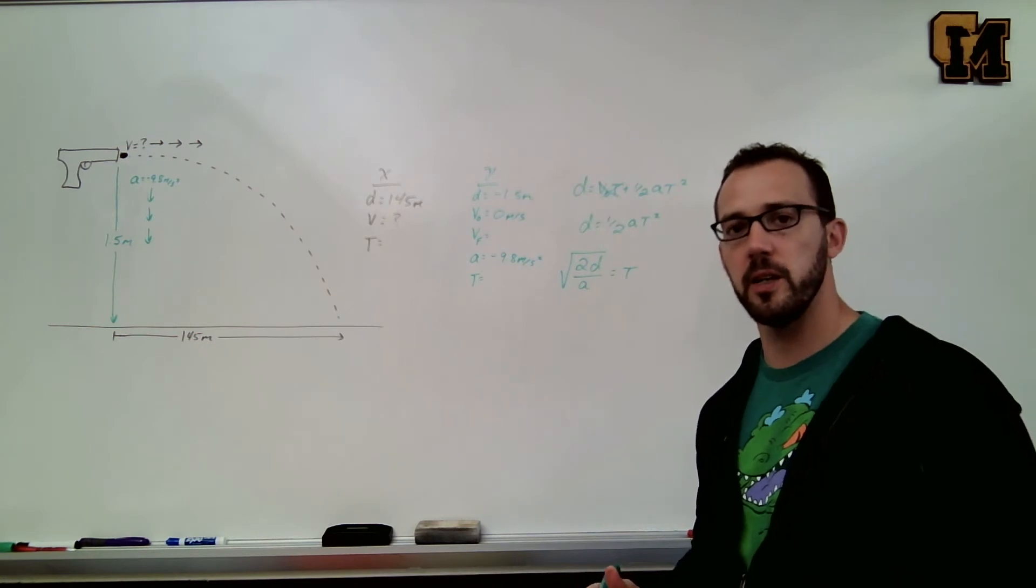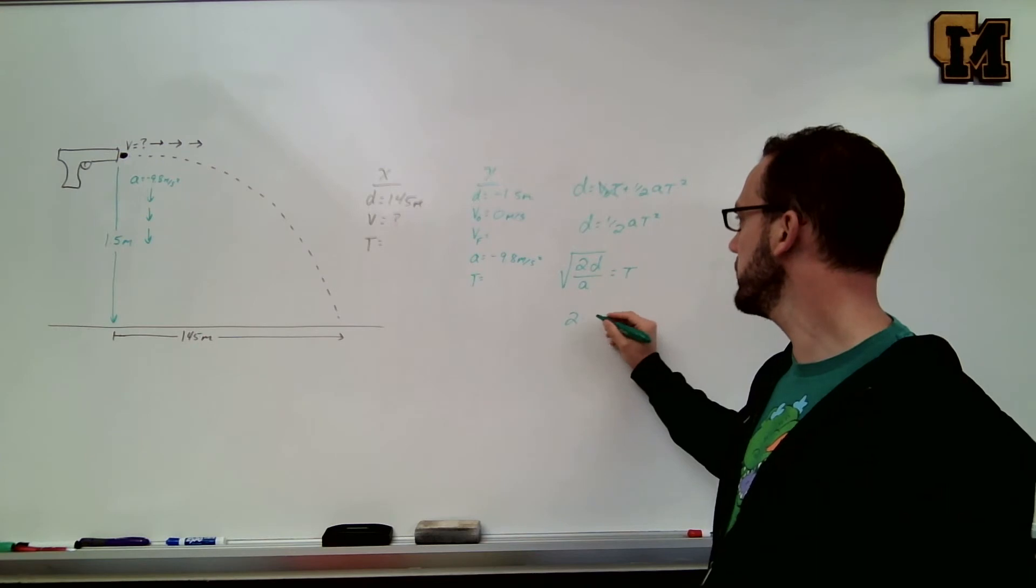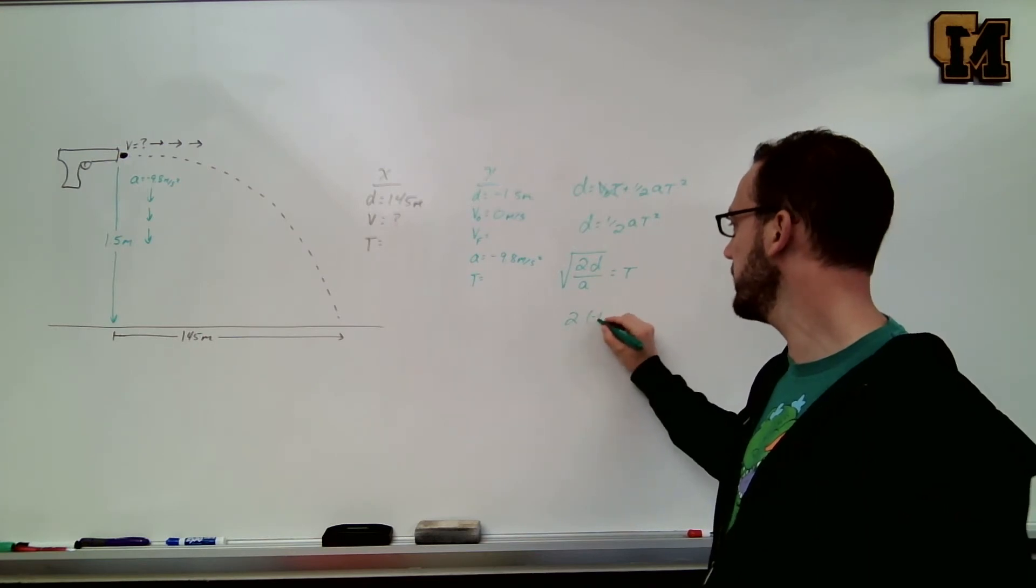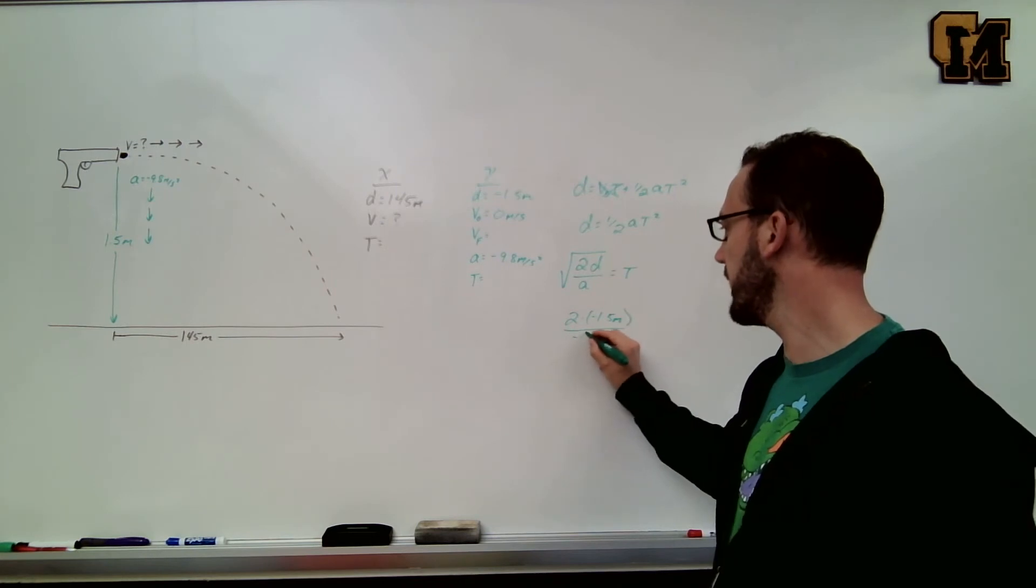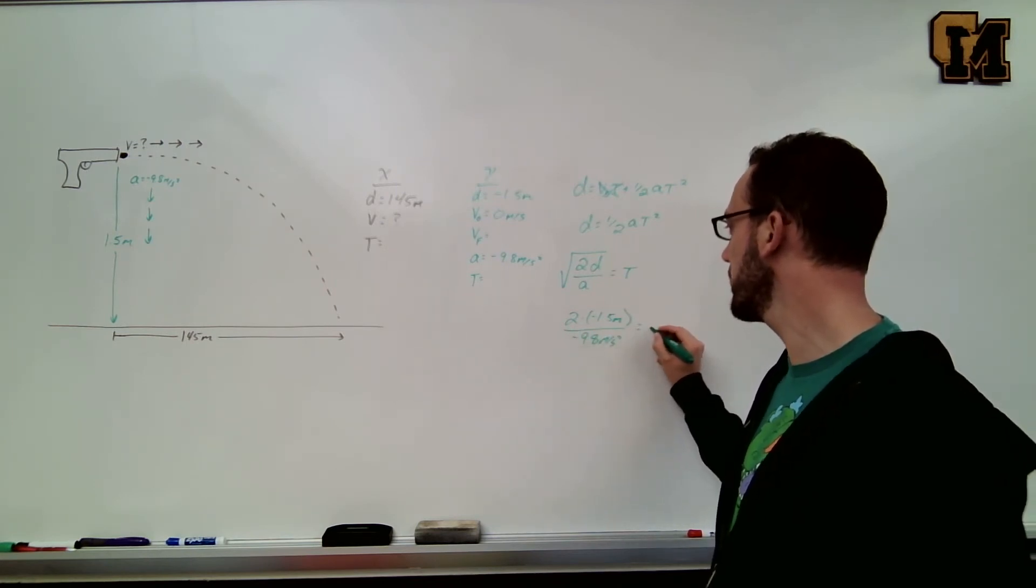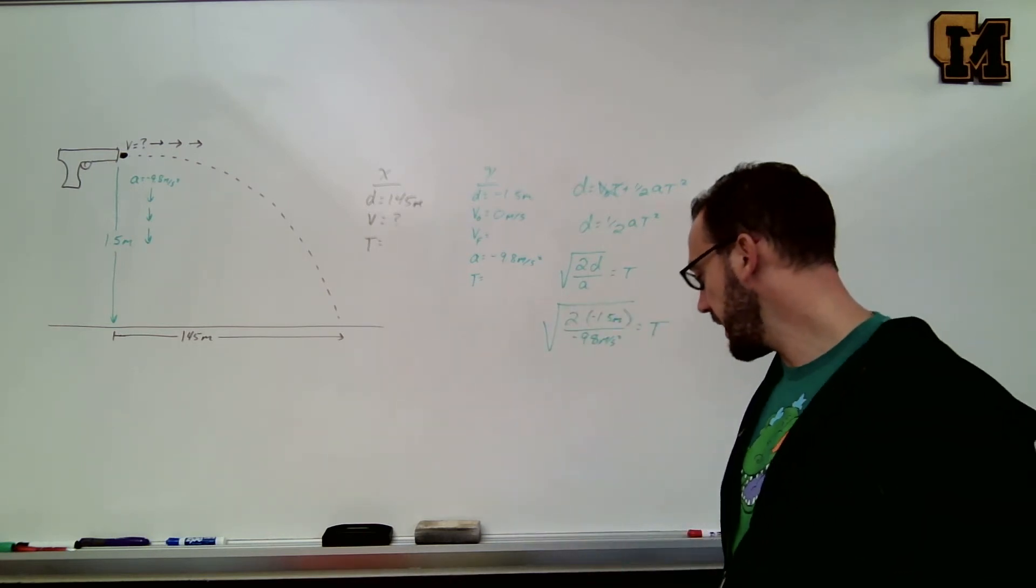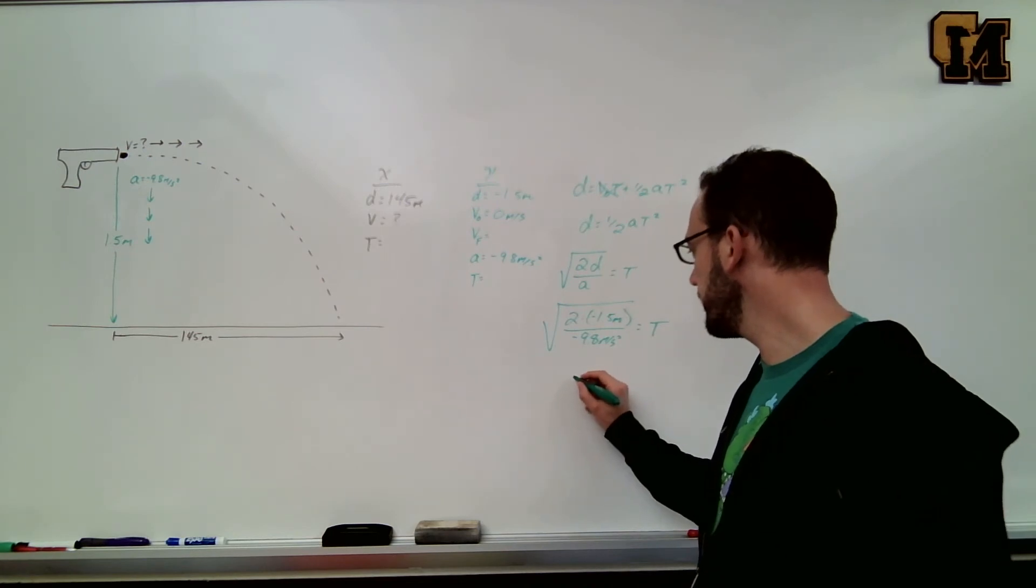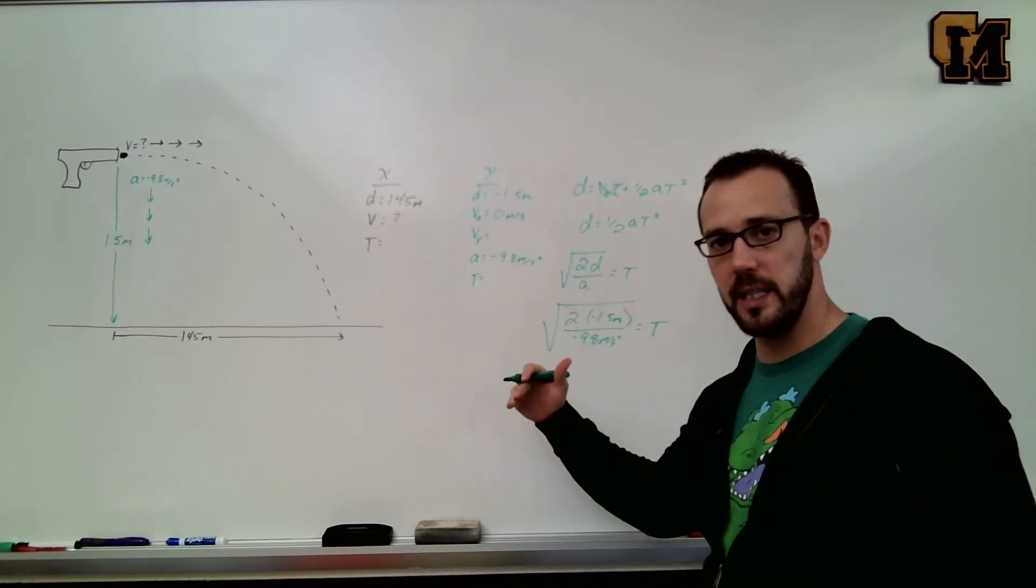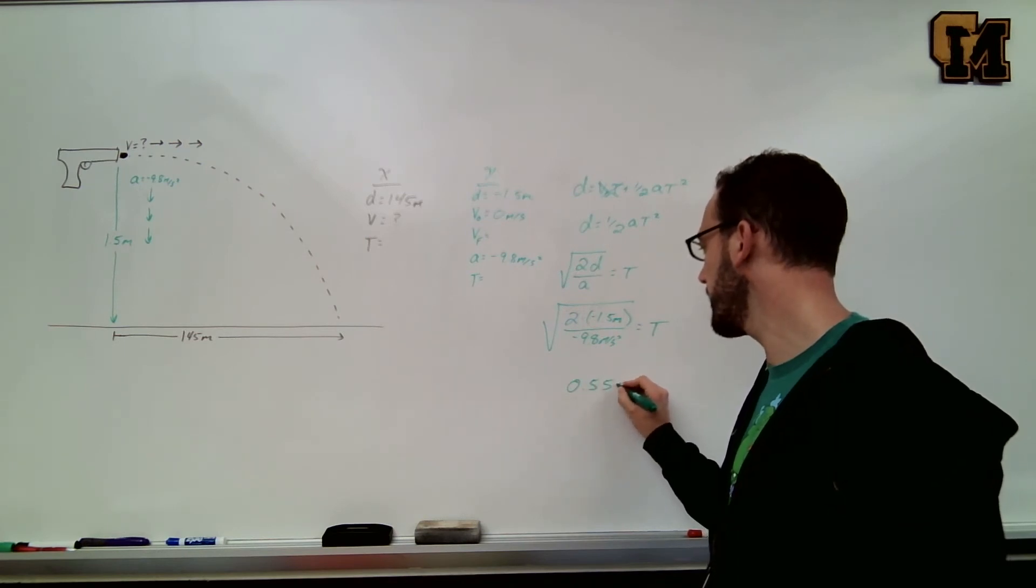Now I'm able to plug in our numbers, plug it into the calculator and solve. So 2 times the d, which is negative 1.5 meters, over negative 9.8 meters per second squared. And don't forget your square root. Plugging that in, what we're going to find is a time for the bullet to get to the ground of 0.55 seconds.